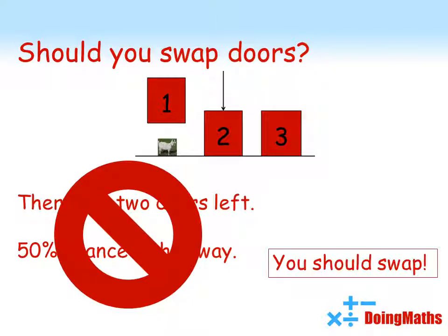If you swap doors, you are actually twice as likely to win as if you don't swap. This is so counterintuitive that many mathematicians argued against it when they first heard it.